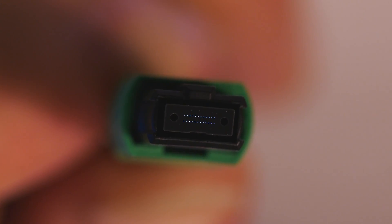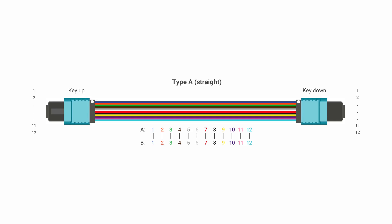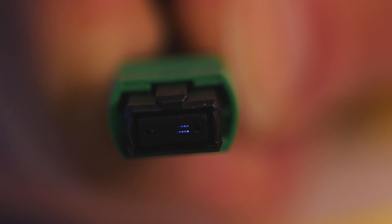In the first demo, we observed that when I laid up each fiber of the cable from left to right, each lit up the same way at the other end. This is a type A or straight-through polarity cable. The fiber at position 1, P1, of one connector goes to position 1, P1, of the other connector.